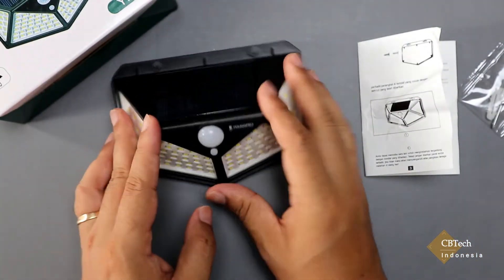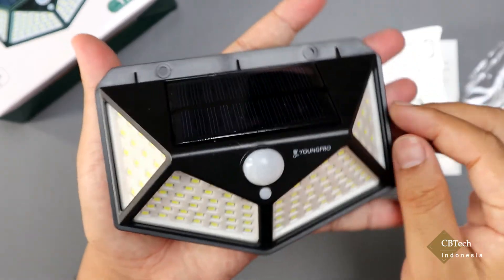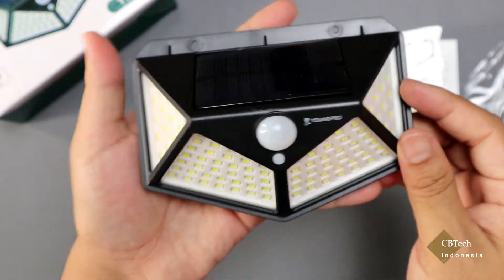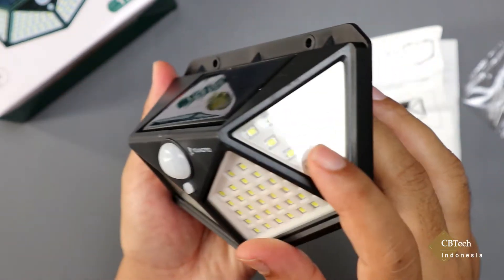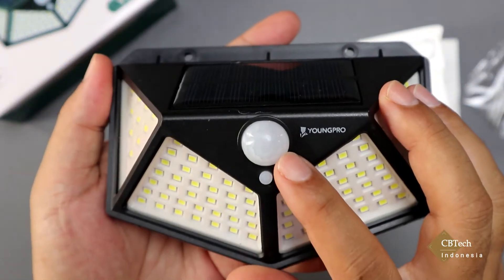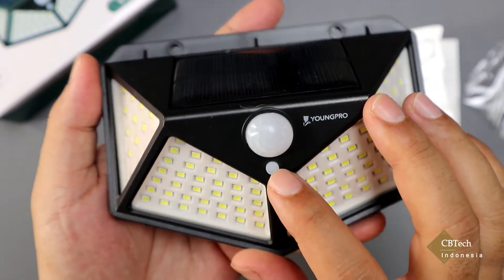Dan inilah lampu Yongpro YPS 100 tersebut. Ukurannya hanya satu telapak tangan saja seperti ini. Lampu LEDnya ada pada sisi bagian depan, begitu juga pada samping kiri dan samping kanannya. Dan ini merupakan sensor gerak, dan yang ini adalah tombol powernya.